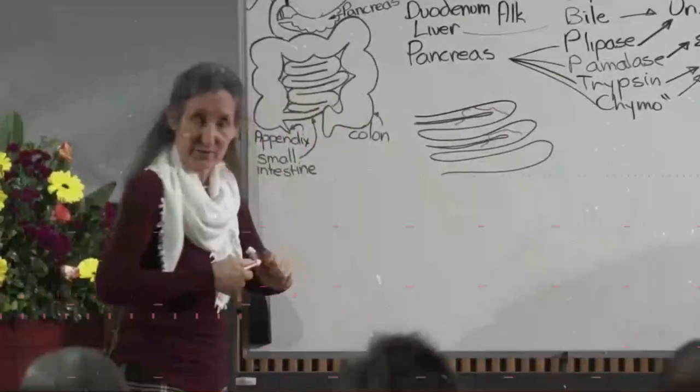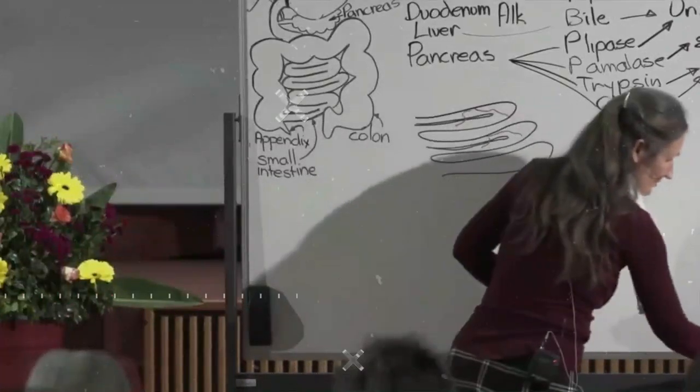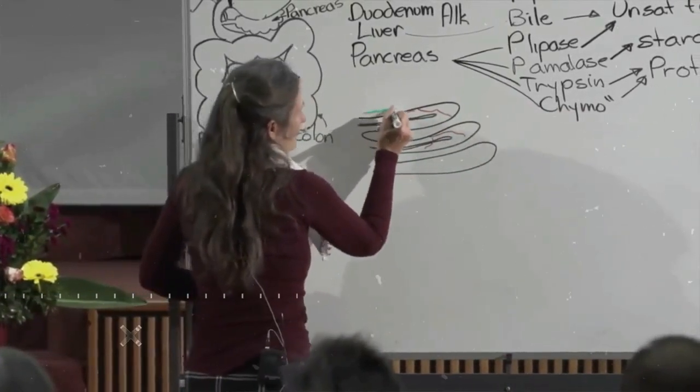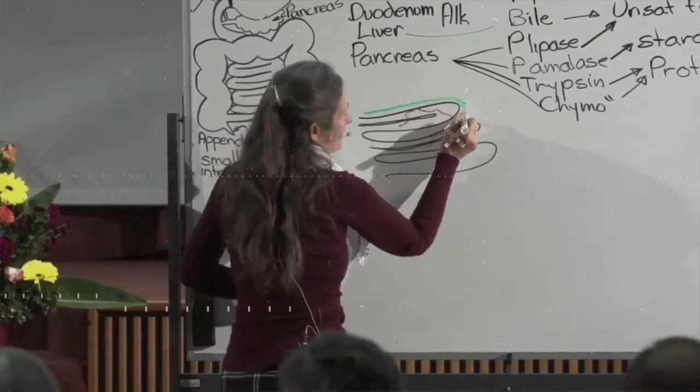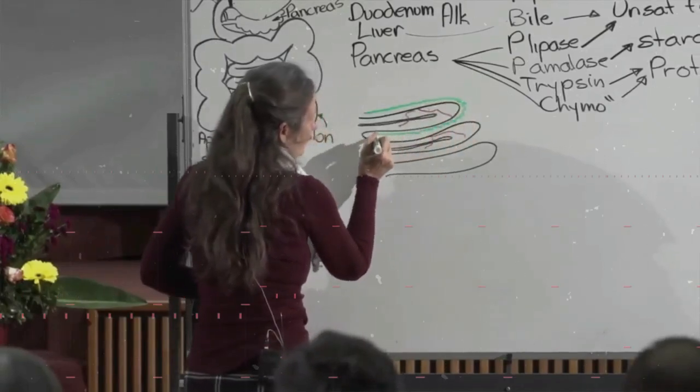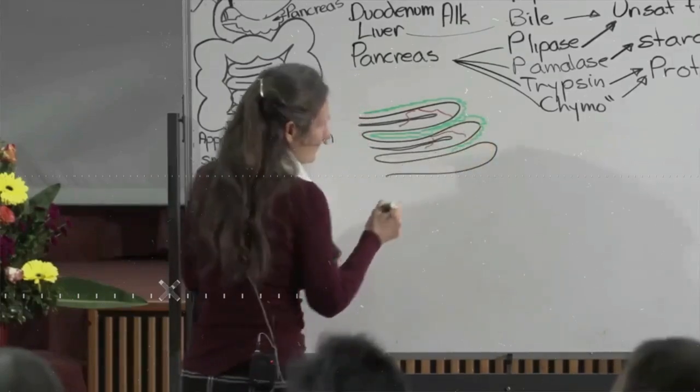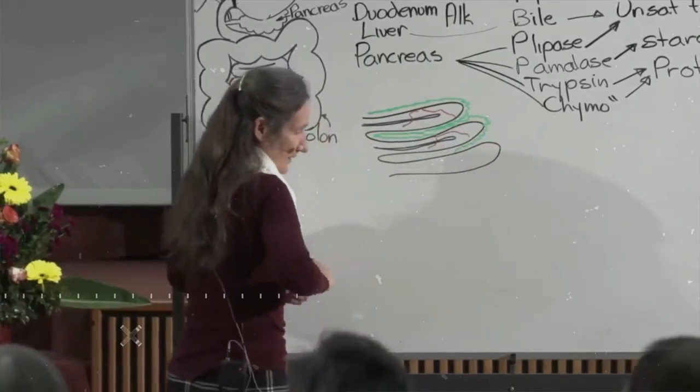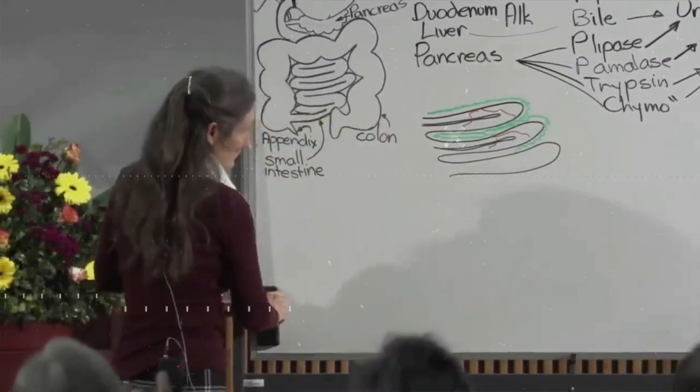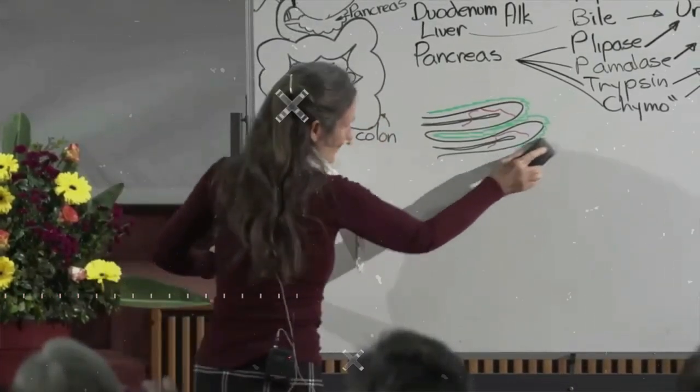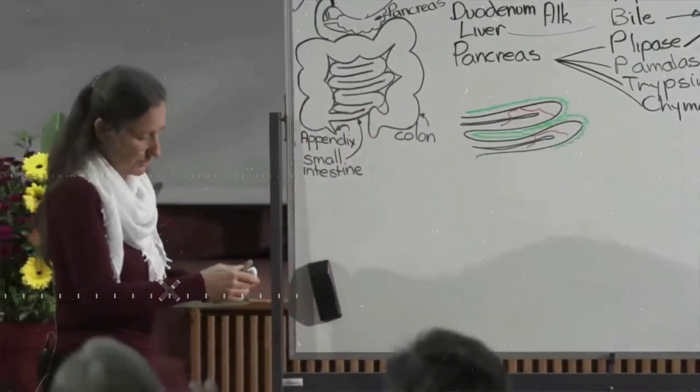Now covering that villi, and we looked at this on Tuesday night, is a thick turf wall. And it's made up of lactobacillus acidophilus bifidus bacterium. Makes a thick turf wall. And that thick turf wall plays a very important role in the final act of digestion.